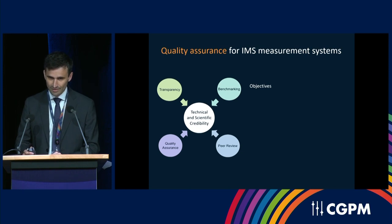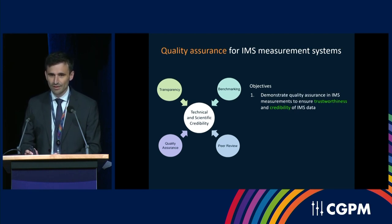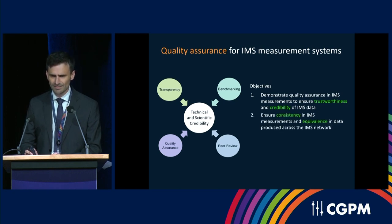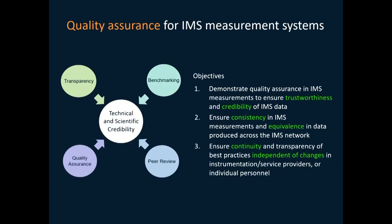We have set some high-level objectives to achieve that credibility. First is to demonstrate the quality assurance in IMS measurements to ensure the trustworthiness and credibility of IMS data. Second is to ensure consistency in IMS measurements and equivalence in data produced across the IMS network. And third is to ensure the continuity and transparency of best practices, regardless of any change in the instrumentation, service providers, or individual personnel.